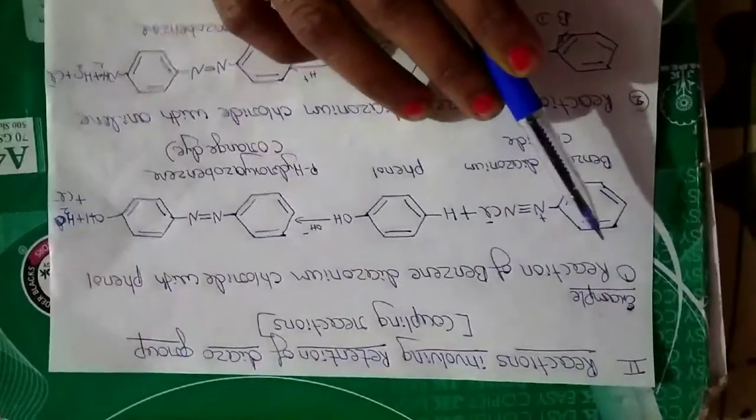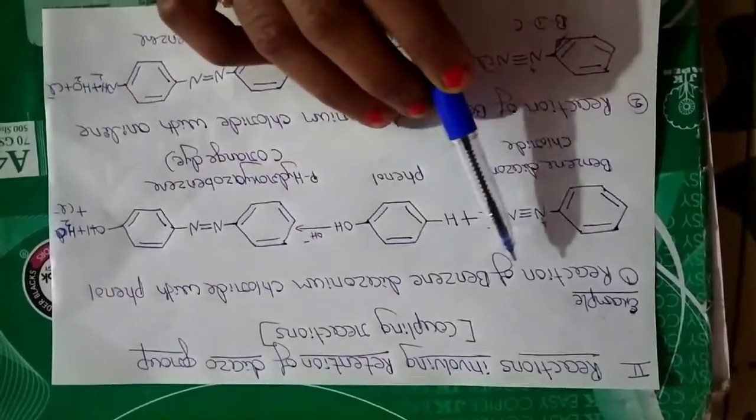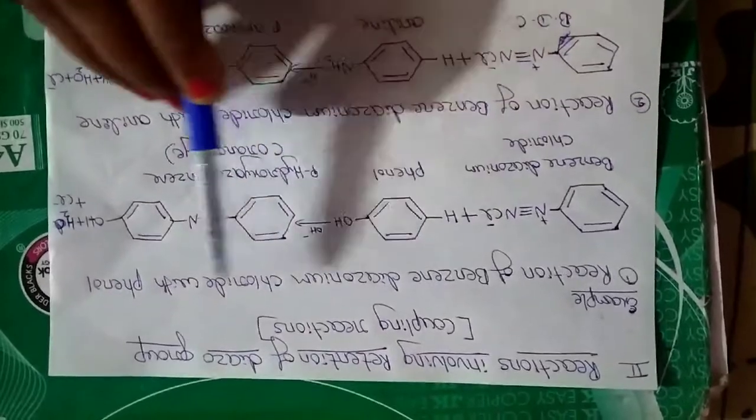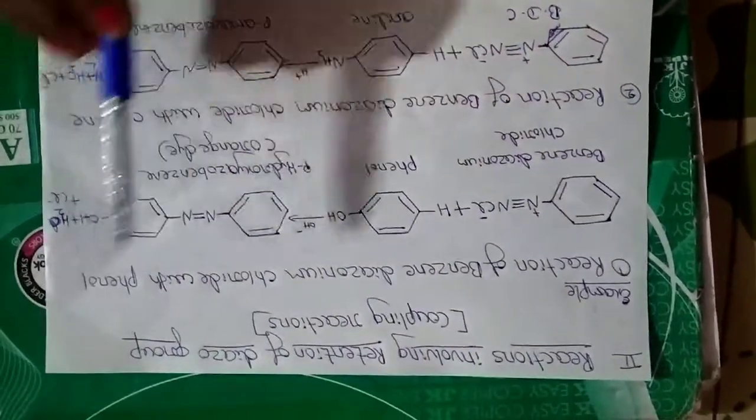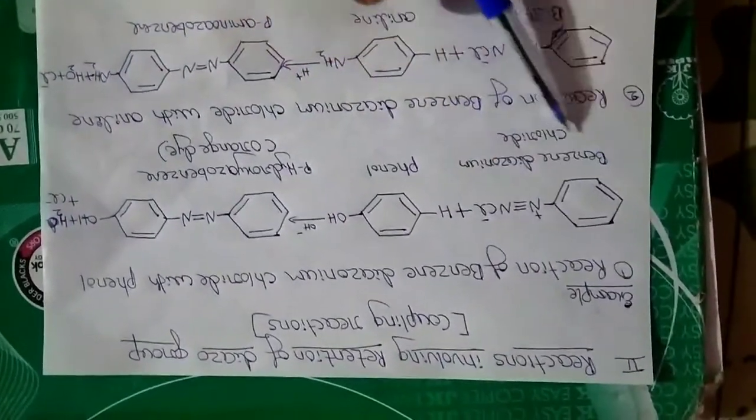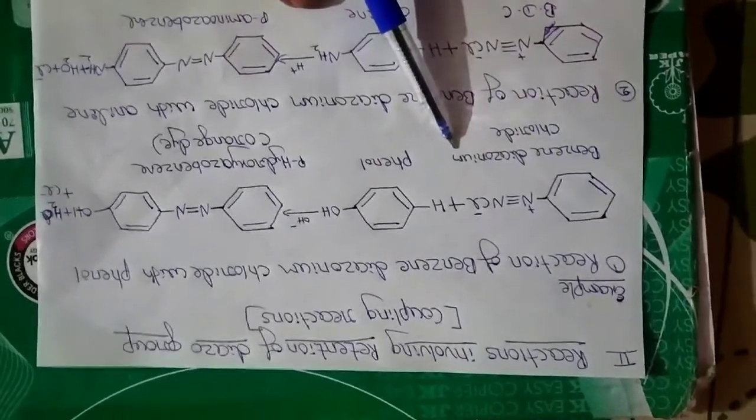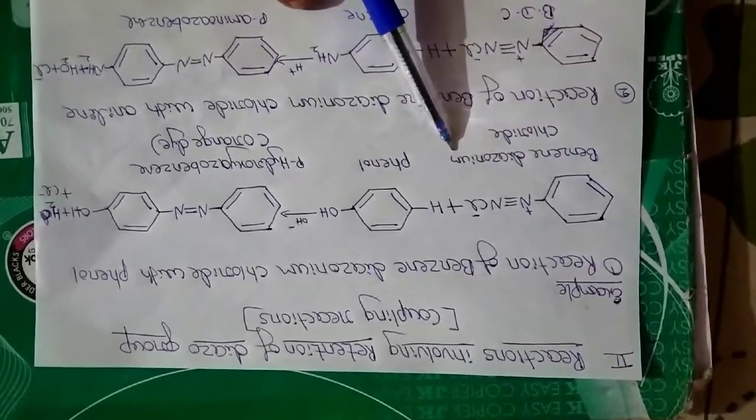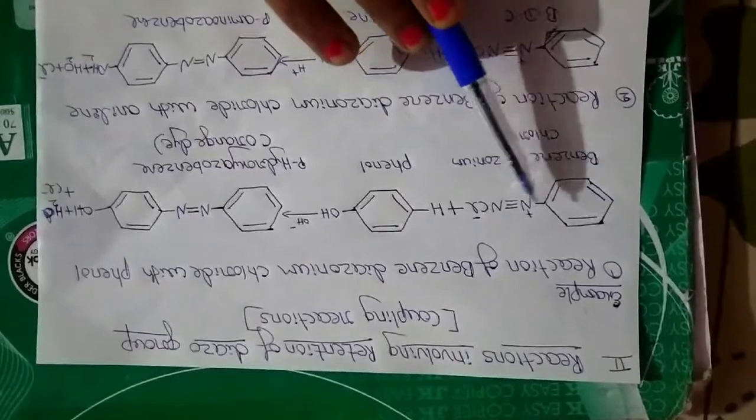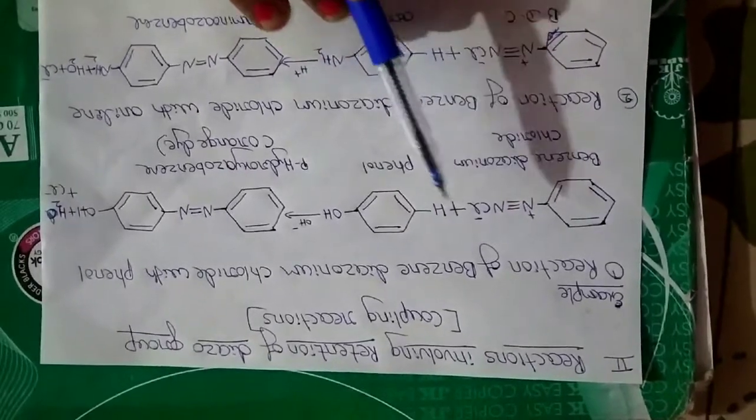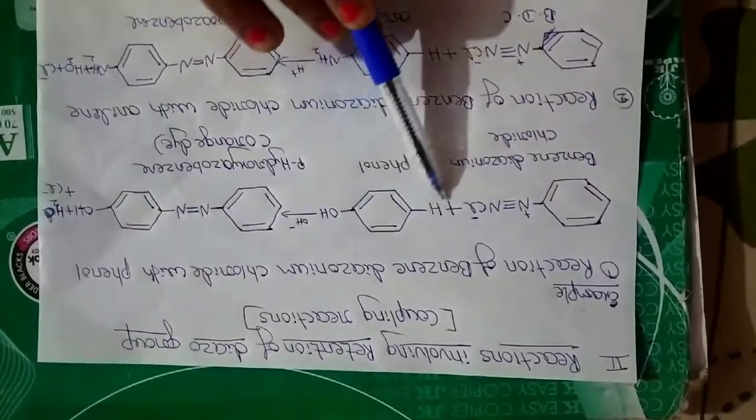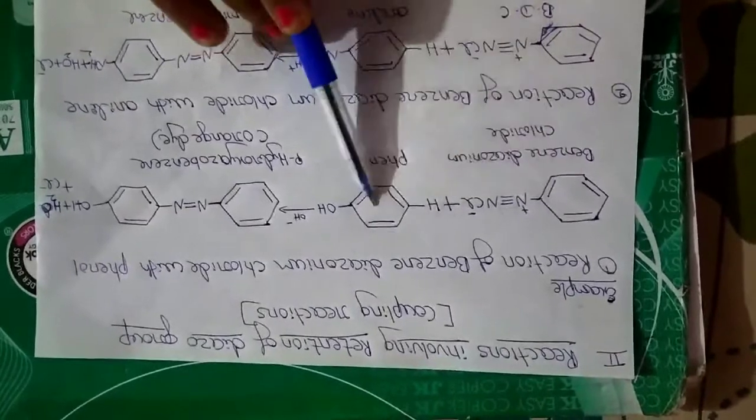Example number one: reaction of benzene diazonium chloride with phenol. Benzene diazonium chloride structure is familiar to you - that is C6H5N2Cl, benzene ring with N2Cl. I have written the phenol structure here to show the reaction properly.